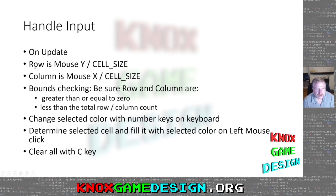For handle input on every update, we determine the row if the mouse is clicked: row is mouse_Y divided by cell_size, and column is mouse_X divided by cell_size. We need to make sure we're doing bounds checking so we're not clicking outside the window. So I'm using the basic MonoGame template in Visual Studio, called flood fill.